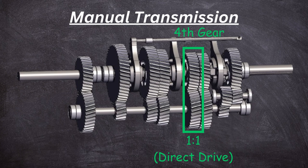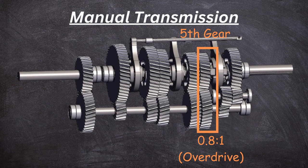In fourth gear we have direct drive — the input gear rotates once for the output gear to also rotate once. After fourth gear is overdrive. In fifth speed the ratio is 0.8 to 1, meaning the input shaft rotates only 0.8 times for the output gear to complete one rotation. Some cars have double overdrive, where the input gear rotates once for the output gear to rotate twice.